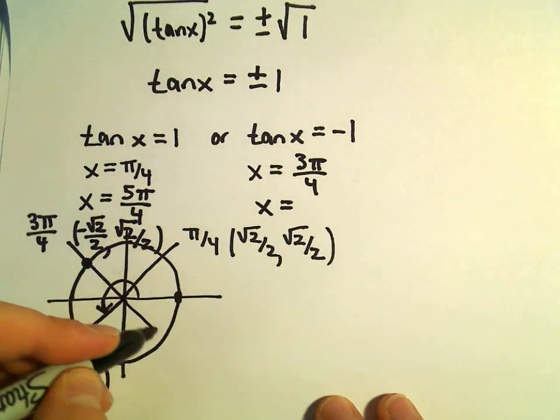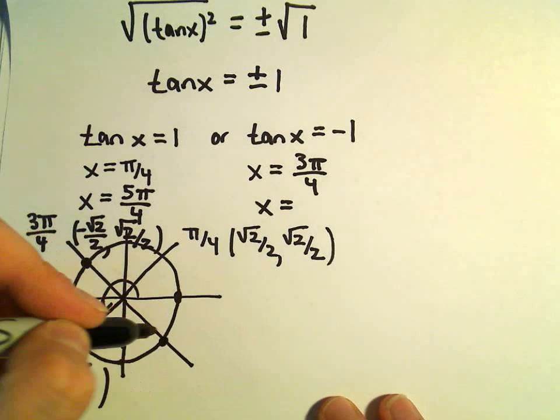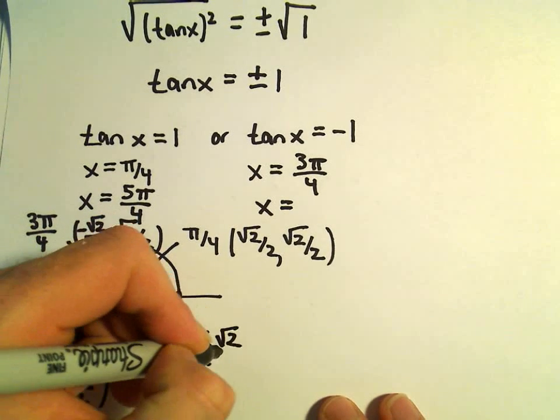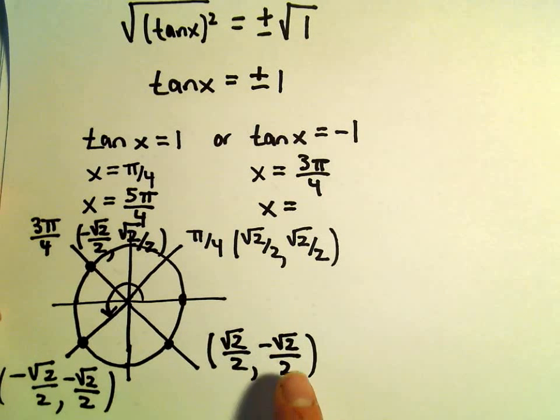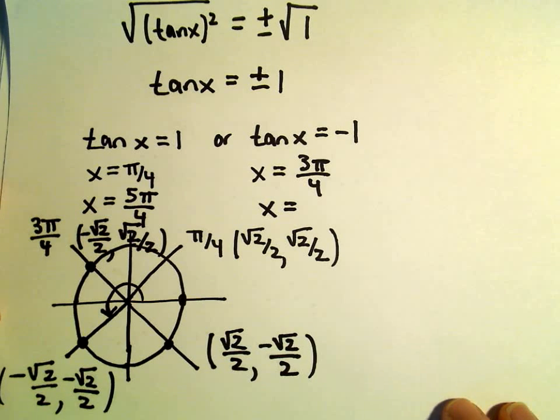And also down here in the fourth quadrant, now we'll get root 2 over 2 and negative root 2 over 2. If we take that y coordinate divided by that x coordinate, we'll get negative 1 for tangent.